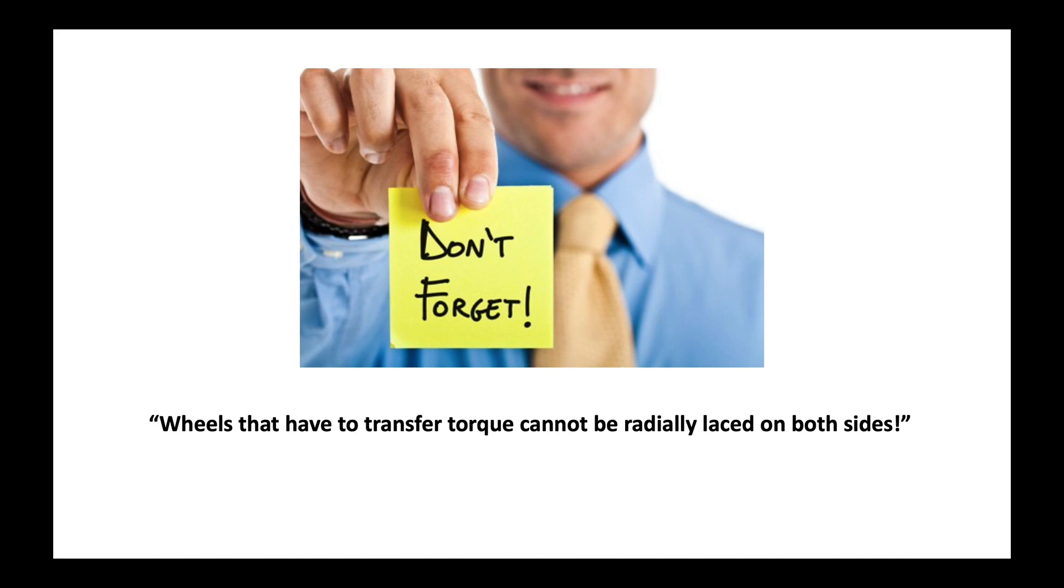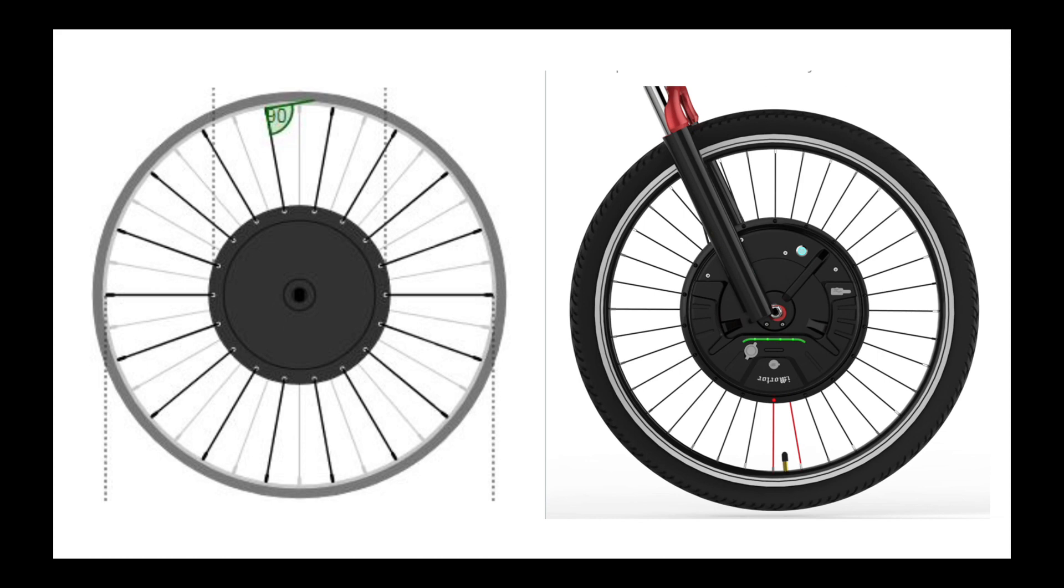This is one of the supposed truisms of wheel builders. Wheels that have to transfer torque cannot be radially laced on both sides. That is normally true, but there are exceptions. These are a few exceptions. If you have a relatively small diameter rim and a really big hub, then you have no choice but to lace the wheel radially. It's not ideal, but it works. In these wheels, even a one cross would give you unacceptable angles.